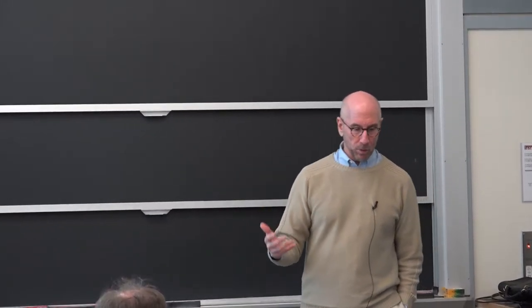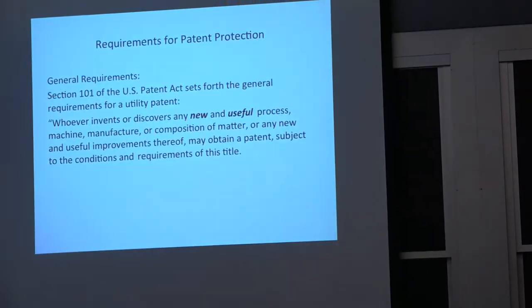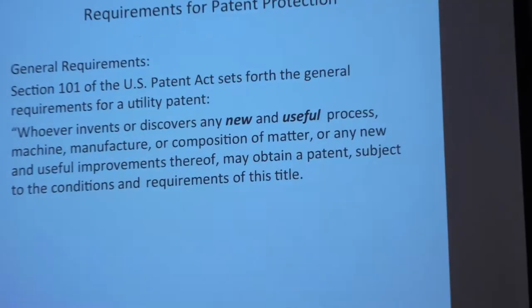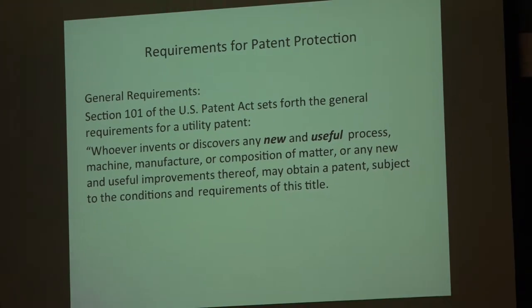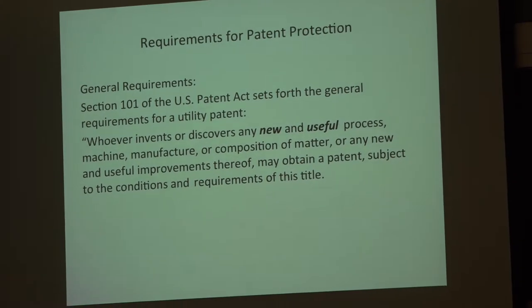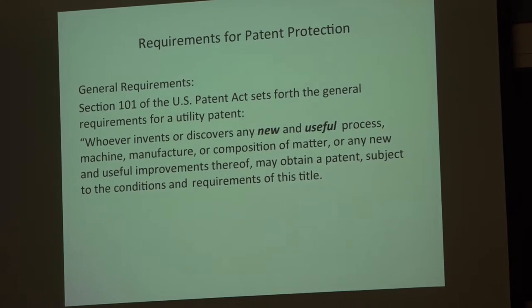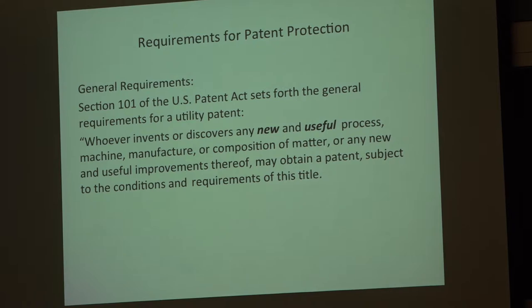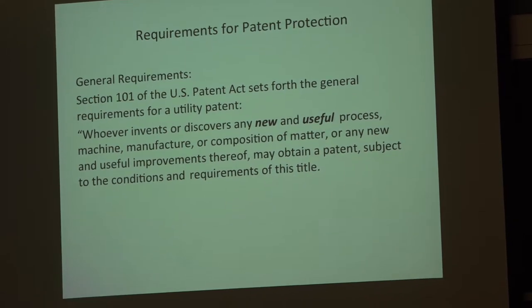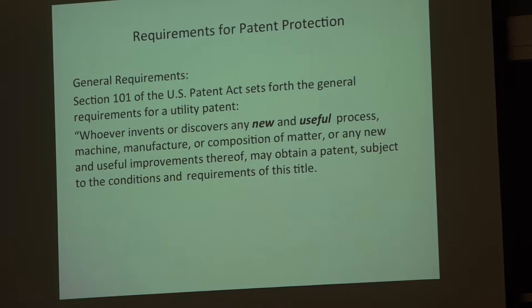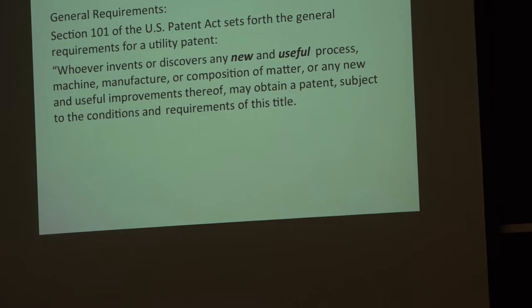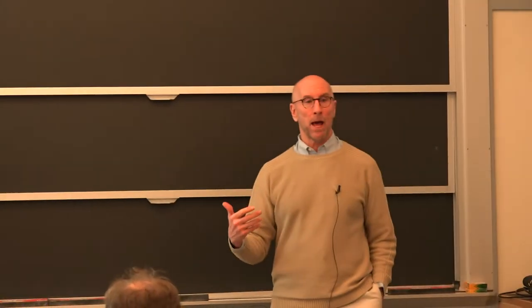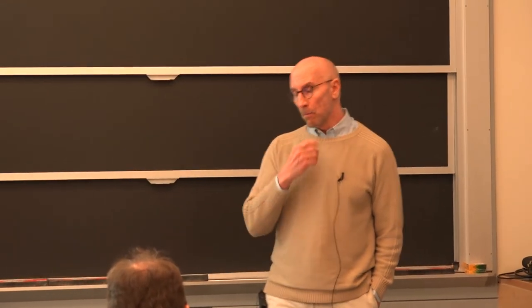So what is patentable? Under Section 101 of the U.S. Patent Act, whoever invents or discovers any new and useful process, machine, manufacture, or composition of matter, or any new and useful improvements thereof, may obtain a patent subject to the conditions and requirements of this title. That is about as broad a description as you'll get of what is patentable in any part of the world.